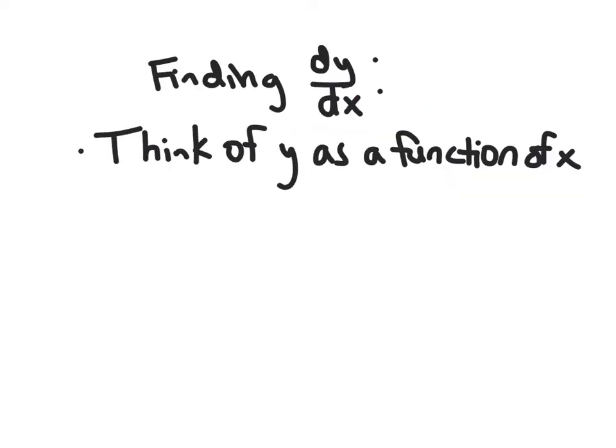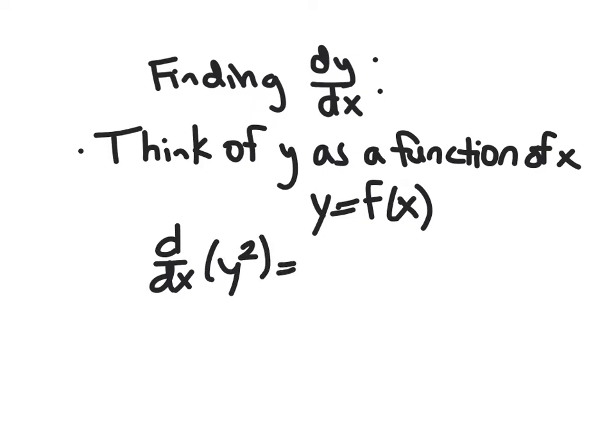So the idea is to think of y as a function of x. So we know we don't have an explicit formula where y is just some f of x, but we do know that y depends on x. As x changes, y is also changing. We see that with the circle. So if you think of y as a function of x, if we then take the derivative of something like y squared, you can kind of think of it, treat it as f of x squared or something. It's some function of x, even if we don't have the formula.